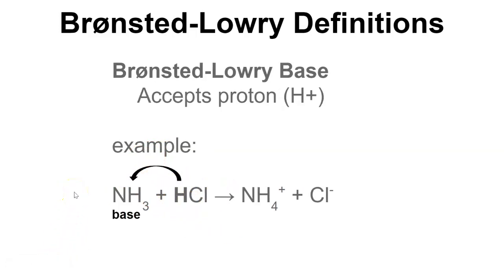A Bronsted-Lowry base will be the proton acceptor, so the hydrogen cation acceptor. So it's the compound that accepts the hydrogen. NH3 accepted it and became NH4, that's our indication that this is the base. So NH3 would be the Bronsted-Lowry base, and HCl would be the acid.